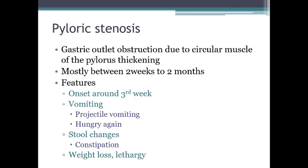Projectile vomiting is a forceful, explosive type of vomiting. Because the outlet is obstructed, food cannot pass into the intestine, so it stays in the stomach and the child vomits forcefully. After vomiting, the child feels hungry again. Stool changes occur, including constipation, because food doesn't reach the intestine. Weight loss also results from malabsorption, and the baby becomes lethargic.